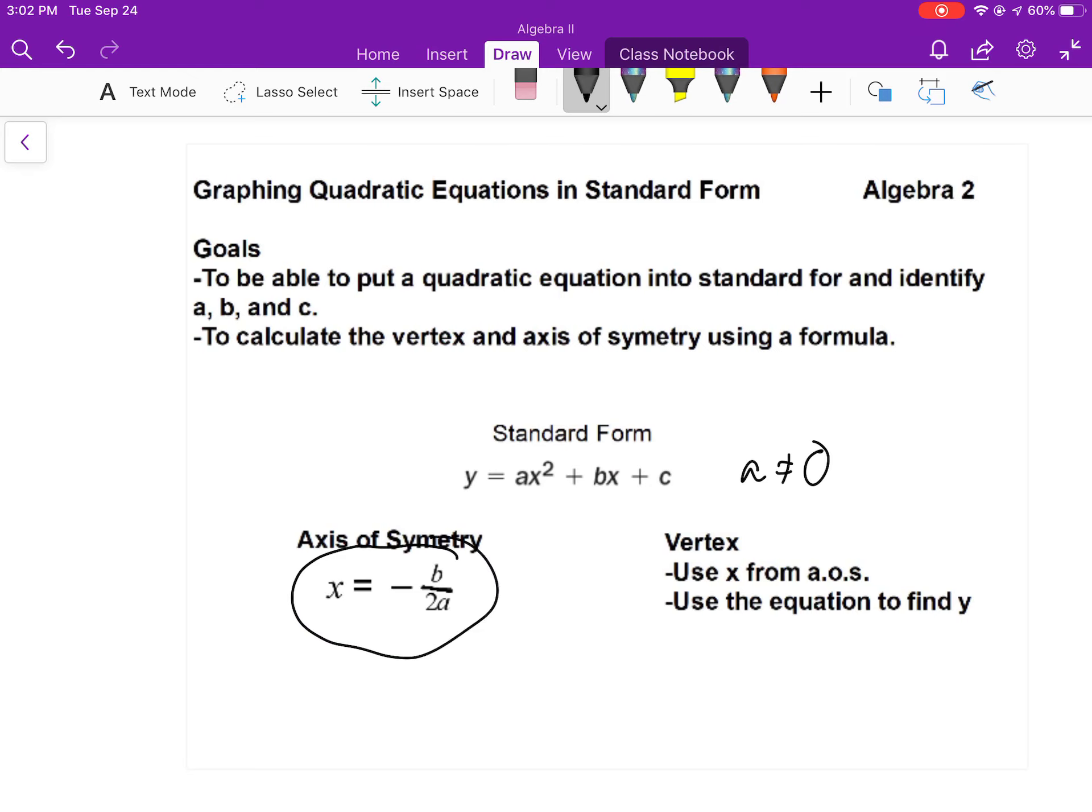Just like you would have done with the intercept form, this x is half of your vertex. So once you find this number, take that number, plug it back into your equation, and a y gets spit out to complete your vertex.